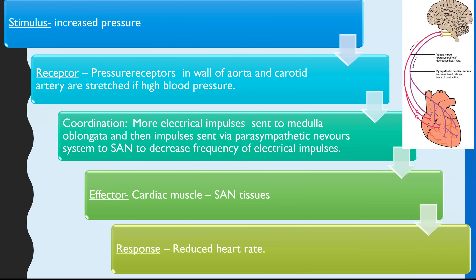This is a long-answer, text-heavy topic where you could be asked a four or five mark question to go through the whole process. Think of it as: stimulus detected by receptor, coordinator that coordinates the response, the effector that implements the response, and the response itself. The first example is an increase in pressure — the receptors are baroreceptors in the walls of the aorta and the carotid artery.